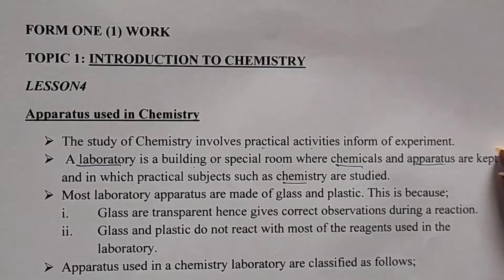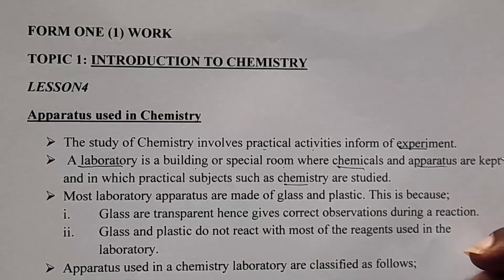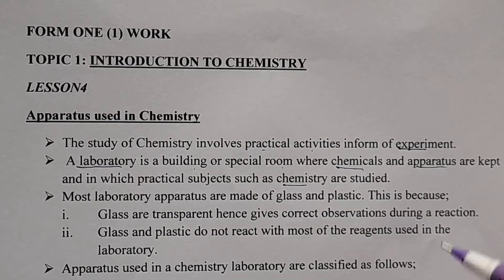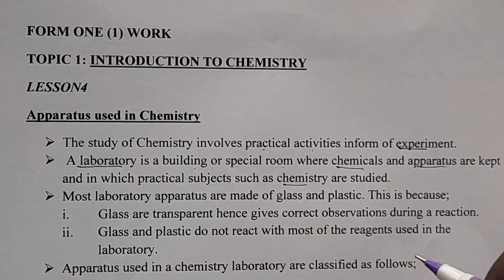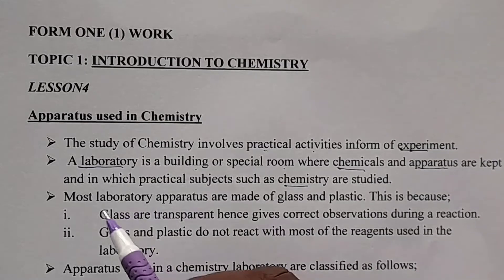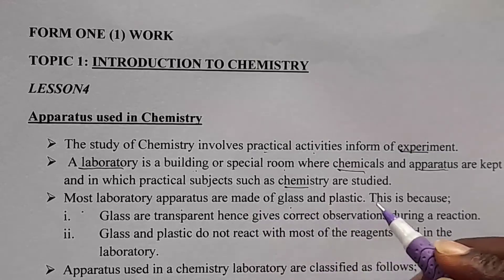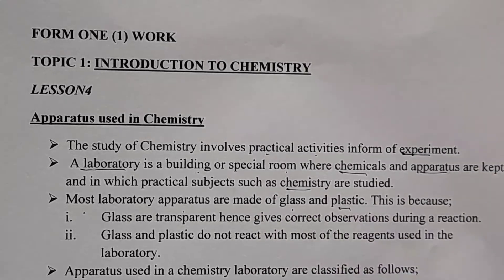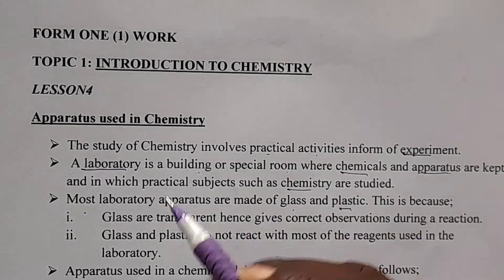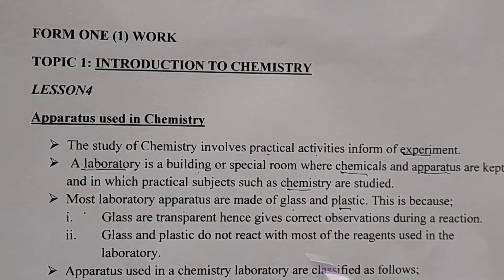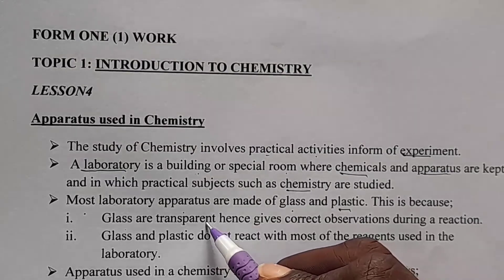These experiments are done using chemicals and some pieces of apparatus. Most of these laboratory apparatus are made up of glass and plastic. There are two main reasons for this. Number one: glass is transparent. If you are told to give a reason why laboratory apparatus are made up of glass, you say because glass is transparent.